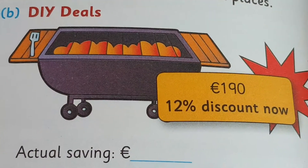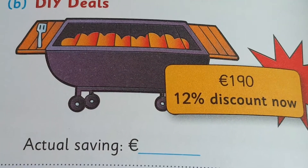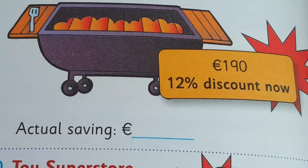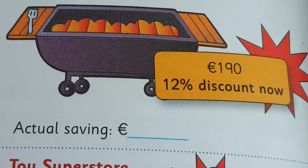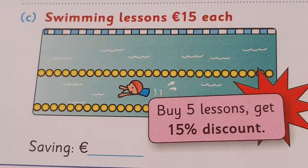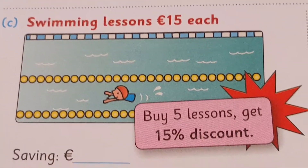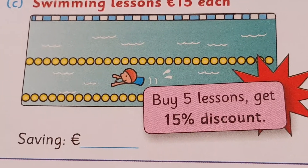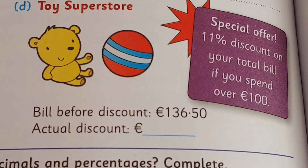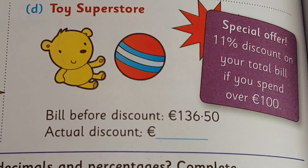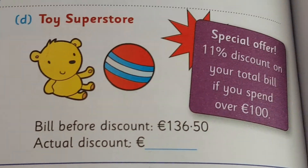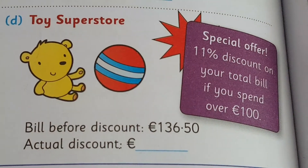So for all the others — there's your amount: 190 times 12%, that's what you put on your calculator. For this one, there's 5 lessons, so you're going to have to multiply your 15 times 5 before you work out your discount. And on this one, 136 euro and 50 cent times 11%.